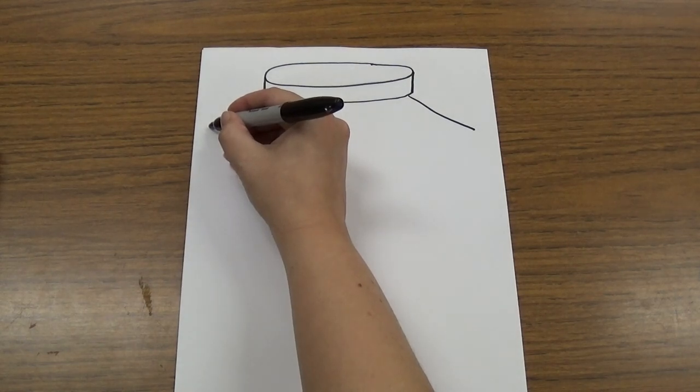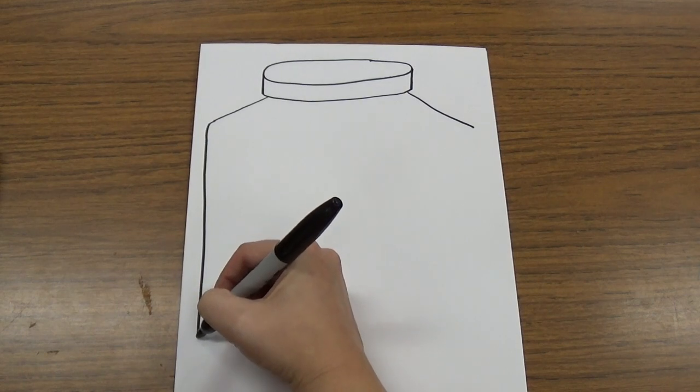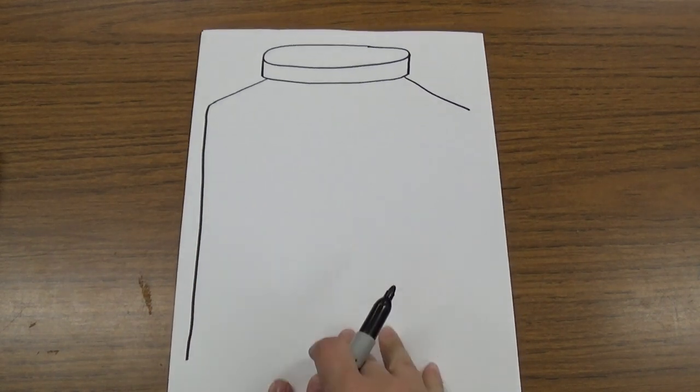Then we're going to make a line that goes down like it follows the side of the paper, almost to the bottom but it's going to stop before the bottom.